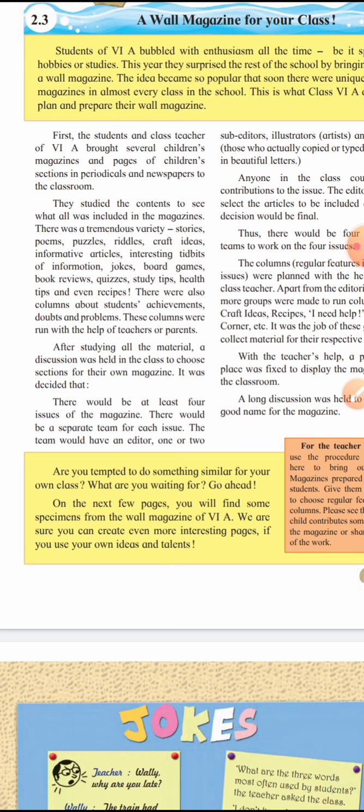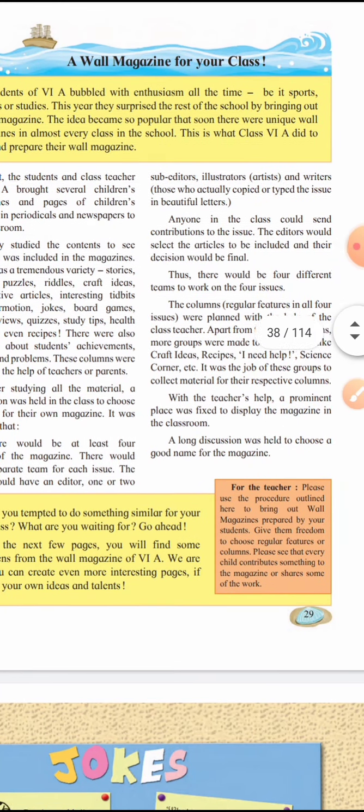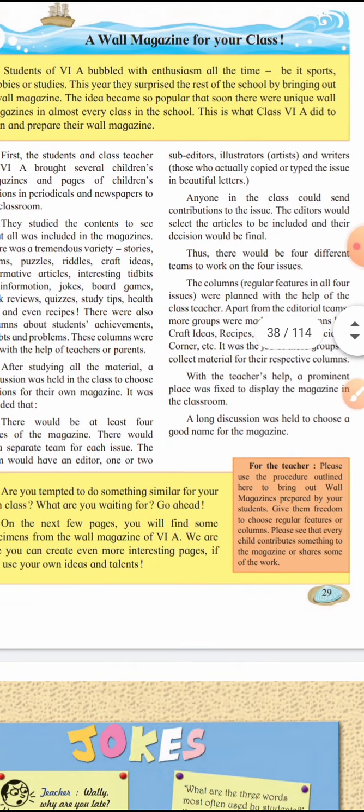After studying all the material, a discussion was held in class to choose sections for their own magazine. It was decided there would be at least four issues of the magazine. There would be a separate team for each issue. The team would have an editor, one or two sub-editors, an illustrator — that is, an artist — and a writer.